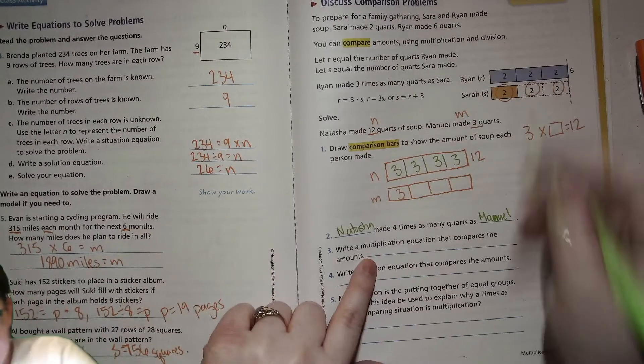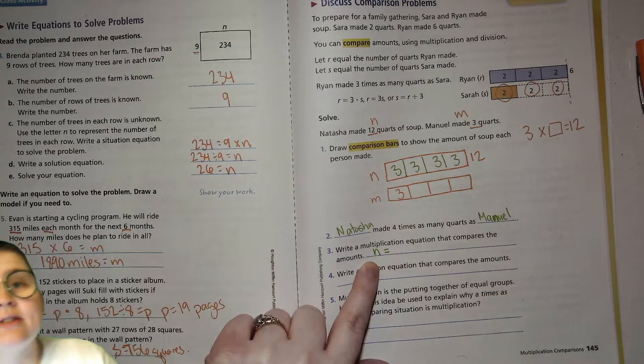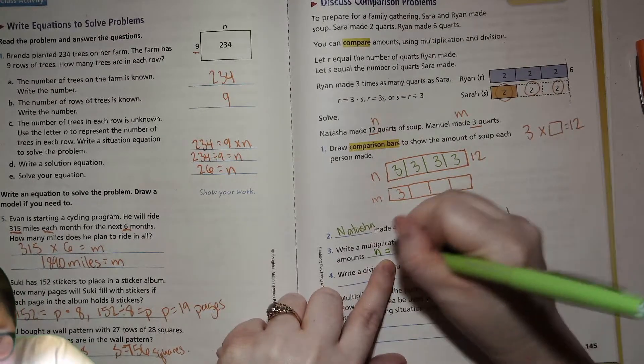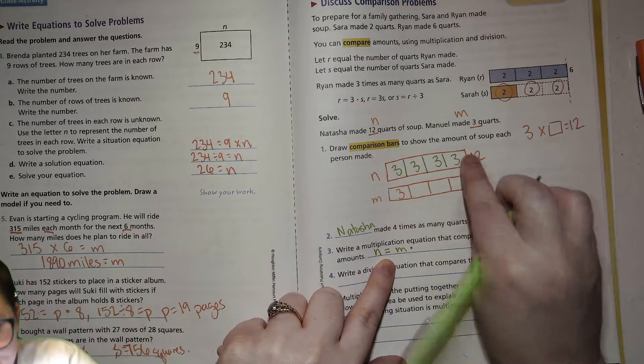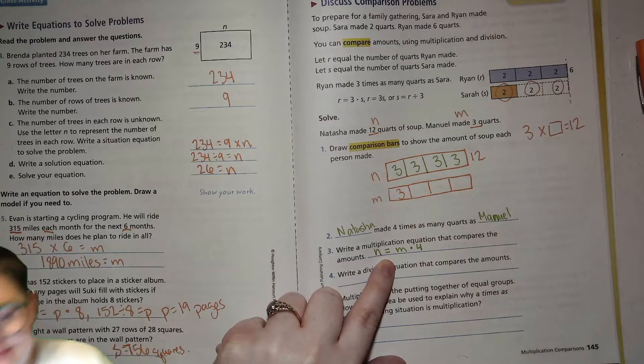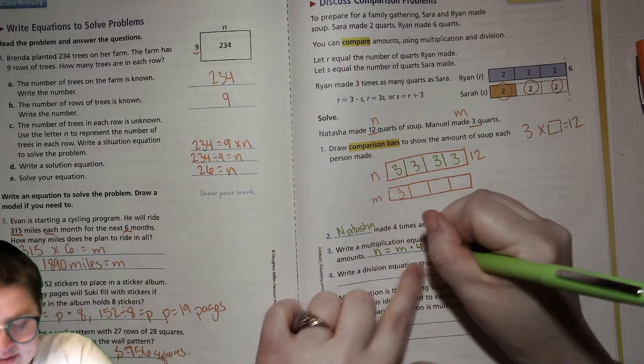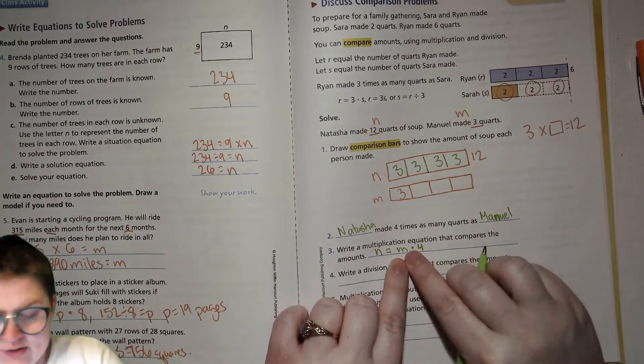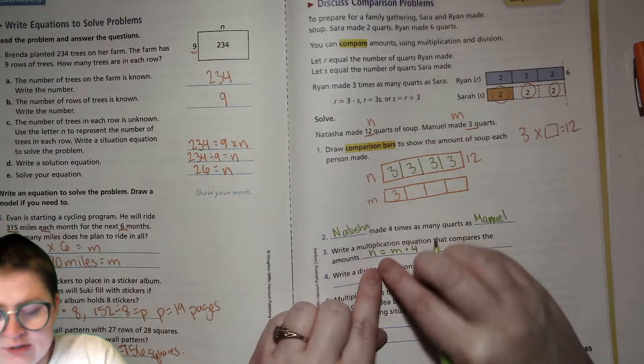So that's Natasha made four times as many quarts as Manuel. So to write a multiplication that compares these amounts, you could do Natasha equals Manuel times how many? Once, twice, three times, four times. Which then you would turn the M, which M equals three. So then it'd be three times four. And Natasha would equal 12.